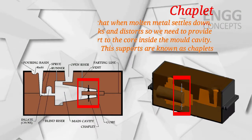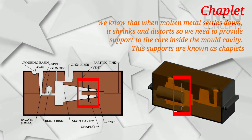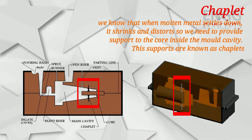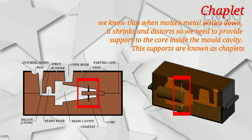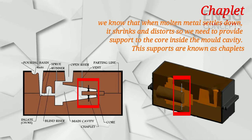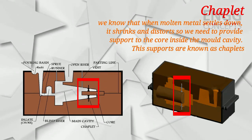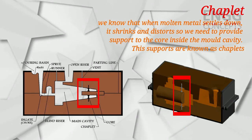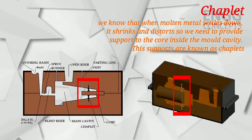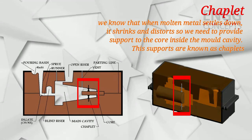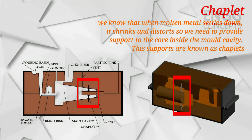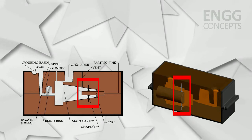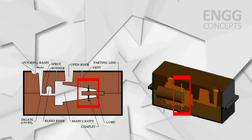When the molten metal settles down, it shrinks and distorts, so we need to provide support to the core inside the mold cavity. These supports are known as chaplets. Chaplets are small metal supports that bridge the gap between the mold surface and the core. Since chaplets become part of the casting, they must be made of a similar material to the metal being cast. Chaplets should not break and their position should not be disturbed. The standard size of the chaplet must be considered, because if the chaplet is too thin, it might melt as soon as the molten metal is poured and thus not provide enough support to the core.